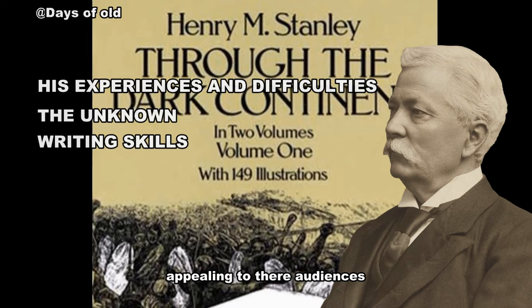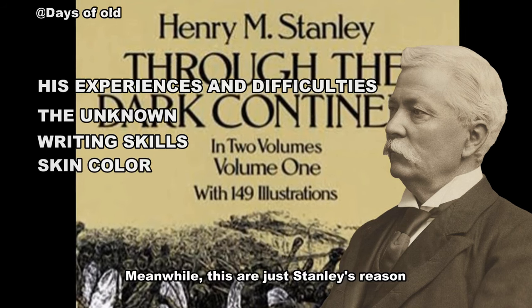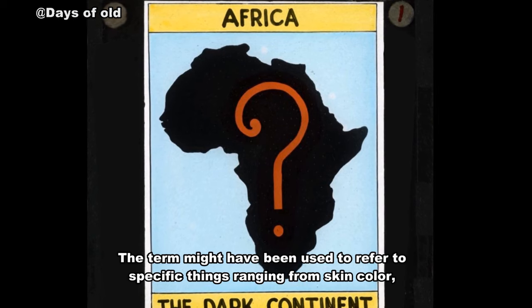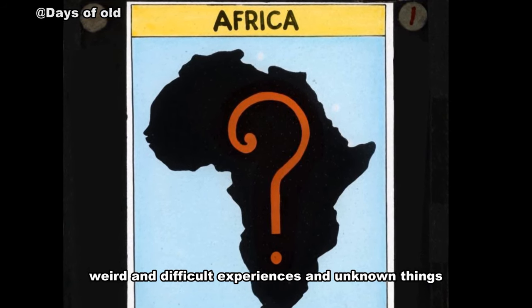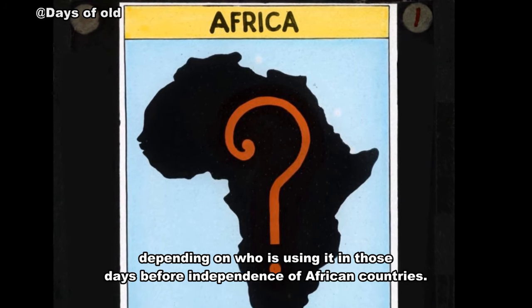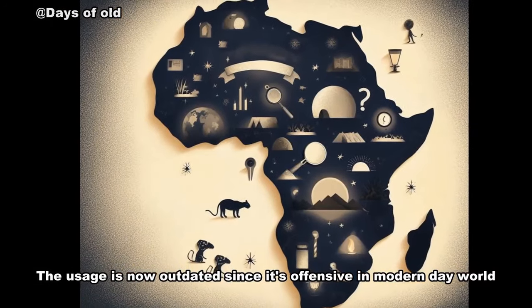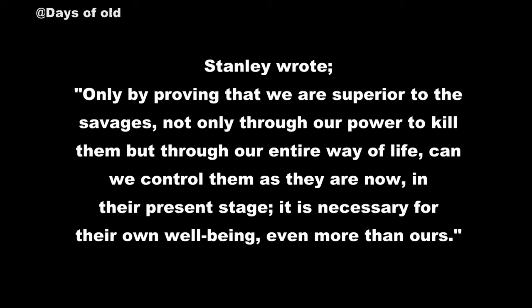I will conclude by saying three things could have inspired the phrase as Stanley's title: his experiences or difficulties, the unknown, and his skills as an experienced writer — writers know how to make their contents appealing to their audience. Then, probably, skin color. These are Stanley's reasons for referring to the continent as the Dark Continent, though the term may have been used for different reasons by different people. The usage is now outdated since it's offensive in modern day. Stanley wrote that only by proving superiority over the 'savages' — not only through power to kill them but through their entire way of life — could they control them.